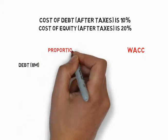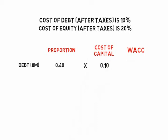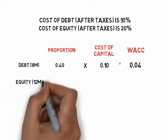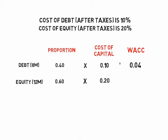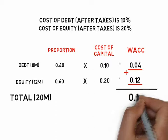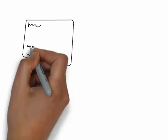Let's now compute for the WACC. The debt is at 8 million, and the proportion of debt to total capitalization is 40%. Multiply that by the cost of capital of 10% and we get a WACC contribution of 0.04. The equity is 12 million pesos, with a proportion of 60%. Multiply that by the cost of capital of 20% to get a WACC contribution of 0.12. Adding 0.04 and 0.12, the overall WACC of XYZ Enterprise is 16% after taxes.